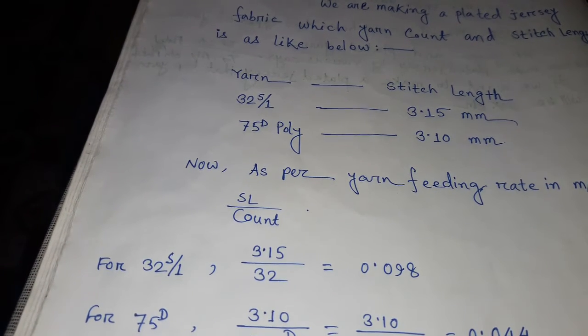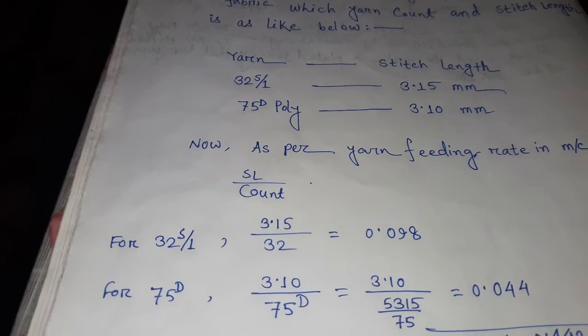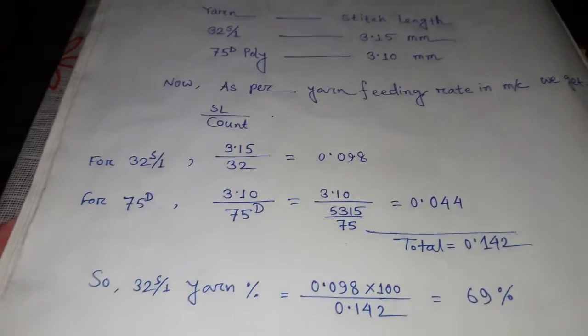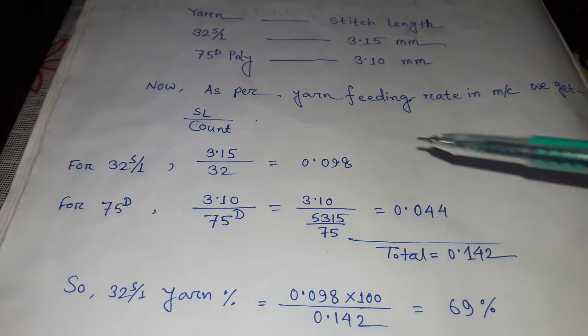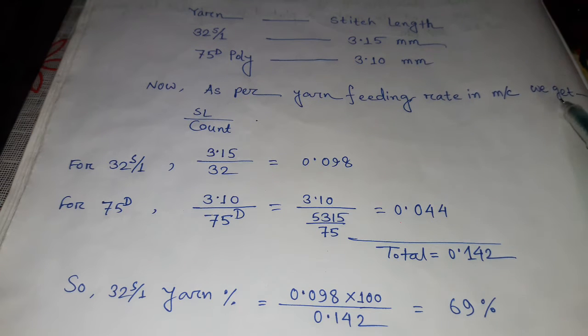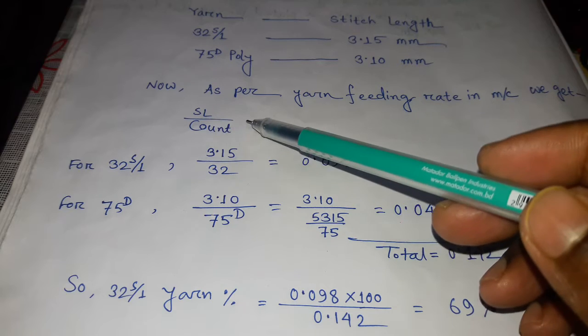Then what will be the yarn percentage? So now you see here, as per yarn feeding rate in machine, we get stitch length divided by count.